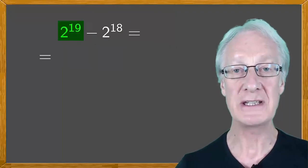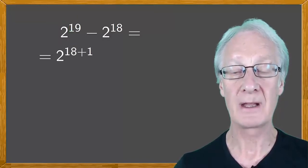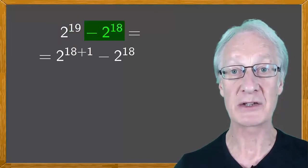We can express 2 to the 19 as 2 to the 18 plus 1, and that's followed by minus 2 to the 18.